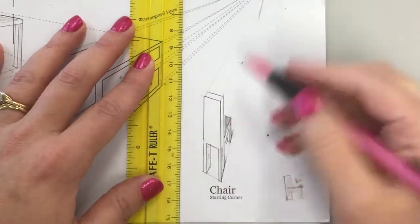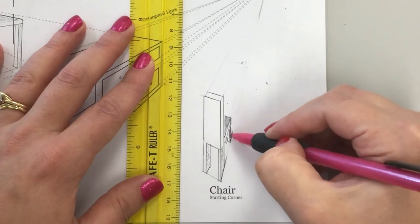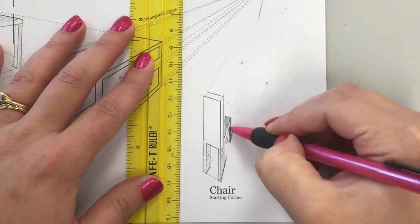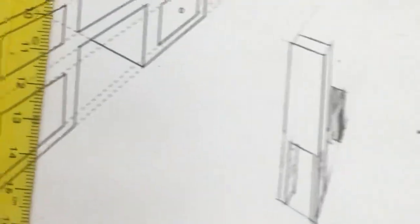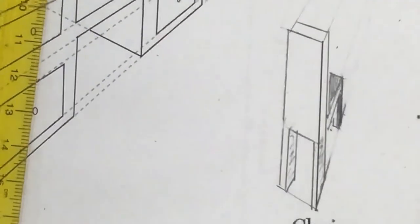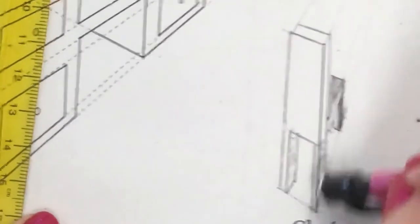So erase this. Gently shade this in so you can see the front of it. Let's zoom in a little bit. Alright. So technically, I need to clean this up a little bit and then our chair is done.